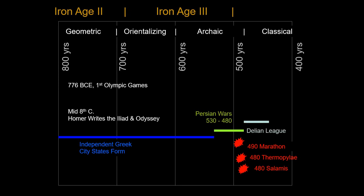After the Persian Wars, Greece unifies into a thing called the Delian League, which overlaps with what we call the Athenian Empire, where Athens comes to dominate this alliance. Ultimately this causes problems, because then we have a war between the Athenians, who want to dominate the alliance, and the Spartans, who have no interest in being part of it.